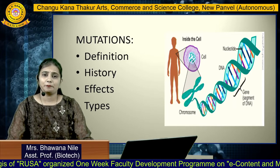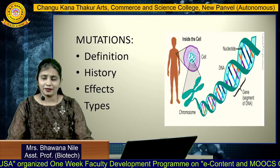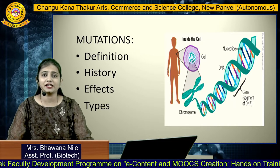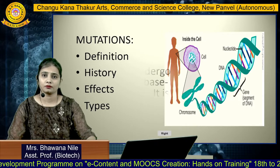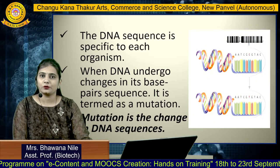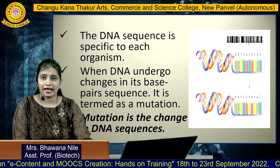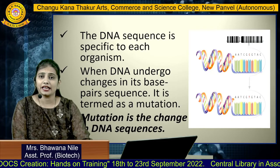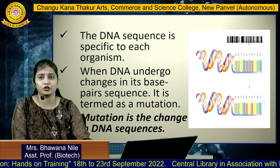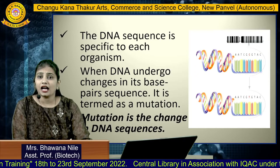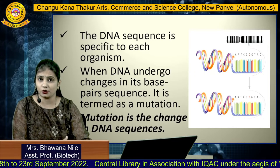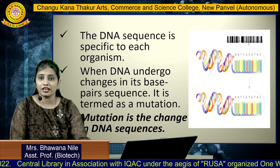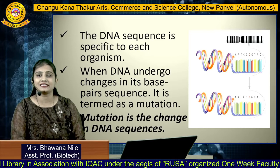In the figure you can see a picture of a cell which has a chromosome. The chromosome contains DNA, which is the hereditary material of the cell. The DNA sequence is specific to each organism. Like we all have different fingerprints, the same thing applies to DNA sequences, which are very unique and specific to each organism. When DNA undergoes changes in its base pair sequences, it is termed as mutations. Overall, mutation is the change in DNA sequences.